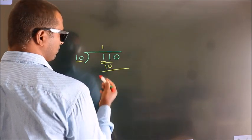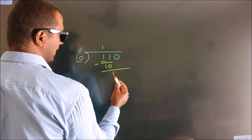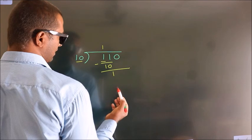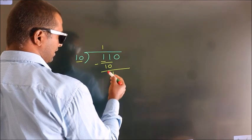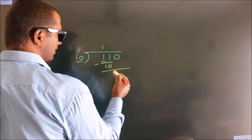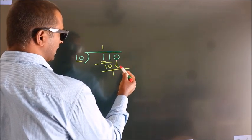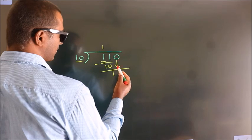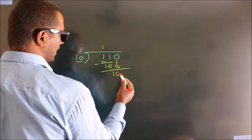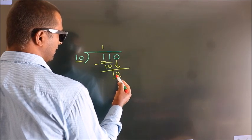Now we should subtract. We get 1. After this, bring down the beside number. So 0 comes down. So we have 10.